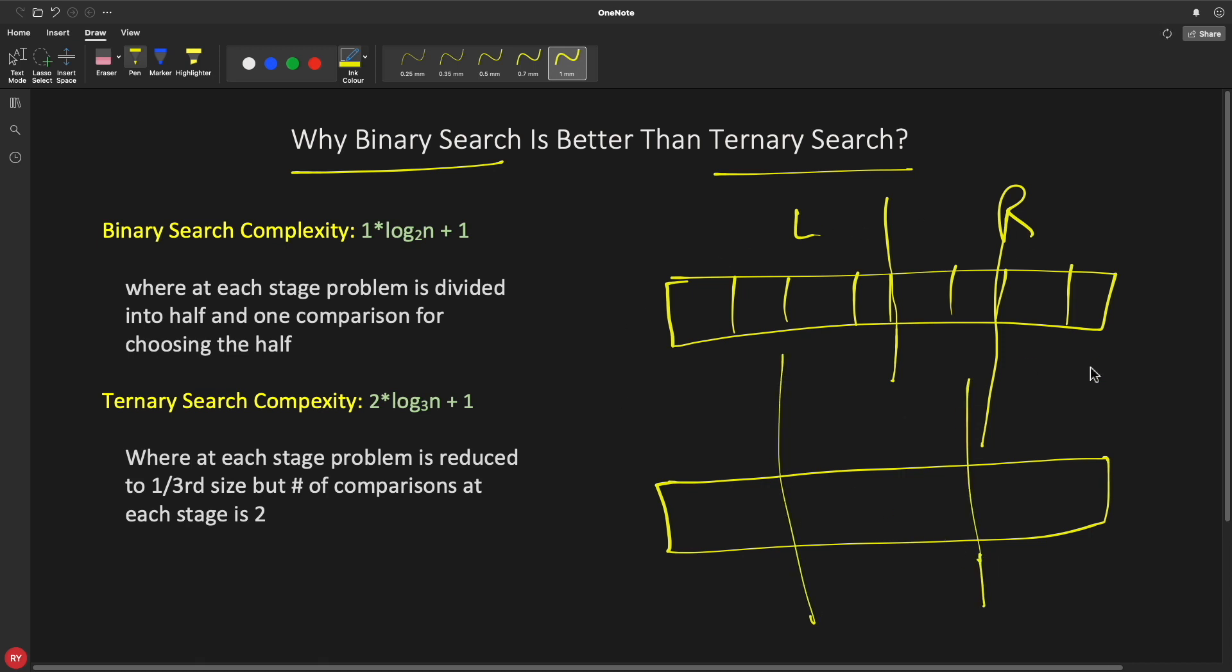In each and every iteration, as we divide in binary search into two, in each and every iteration you will divide this into three. So as you can see that you had one comparison to decide whether you will go for the left one or the right one. Here you have two comparisons - comparison one and comparison two.